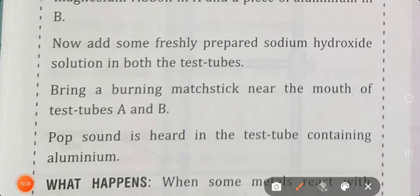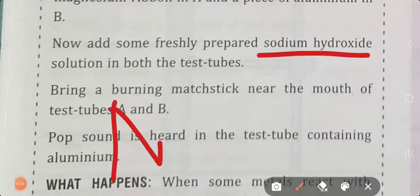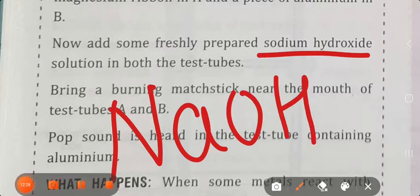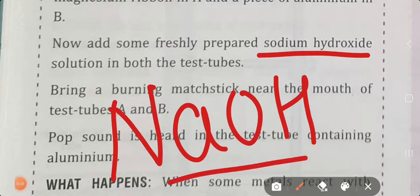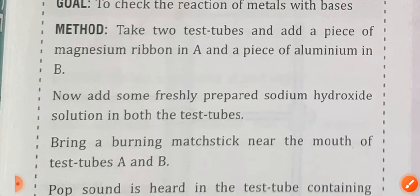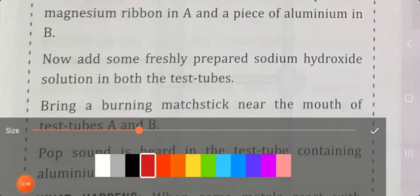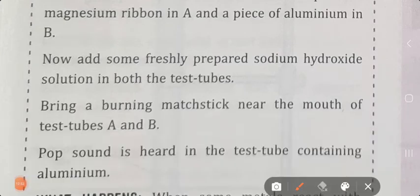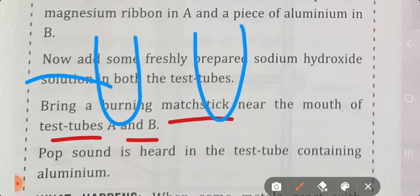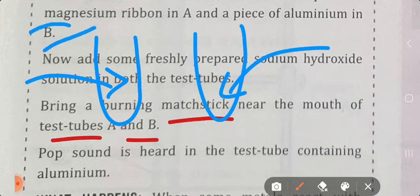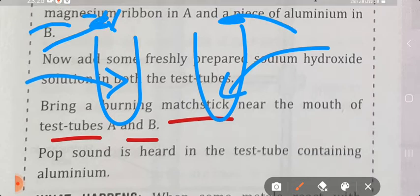Now add some freshly prepared sodium hydroxide solution. Sodium hydroxide - NaOH - is what we call a base. Add sodium hydroxide solution in both test tubes. Then bring a burning match stick near the mouth of test tube A and test tube B. One test tube has magnesium ribbon, the second has aluminium. You added base - sodium hydroxide - then held a burning match stick near the mouth. A pop sound will come.